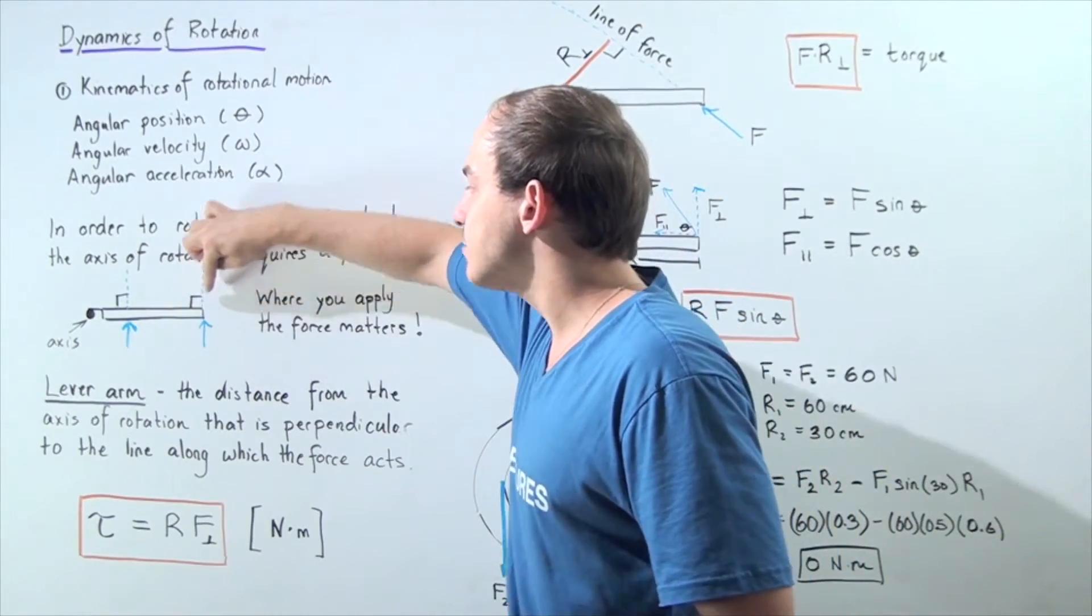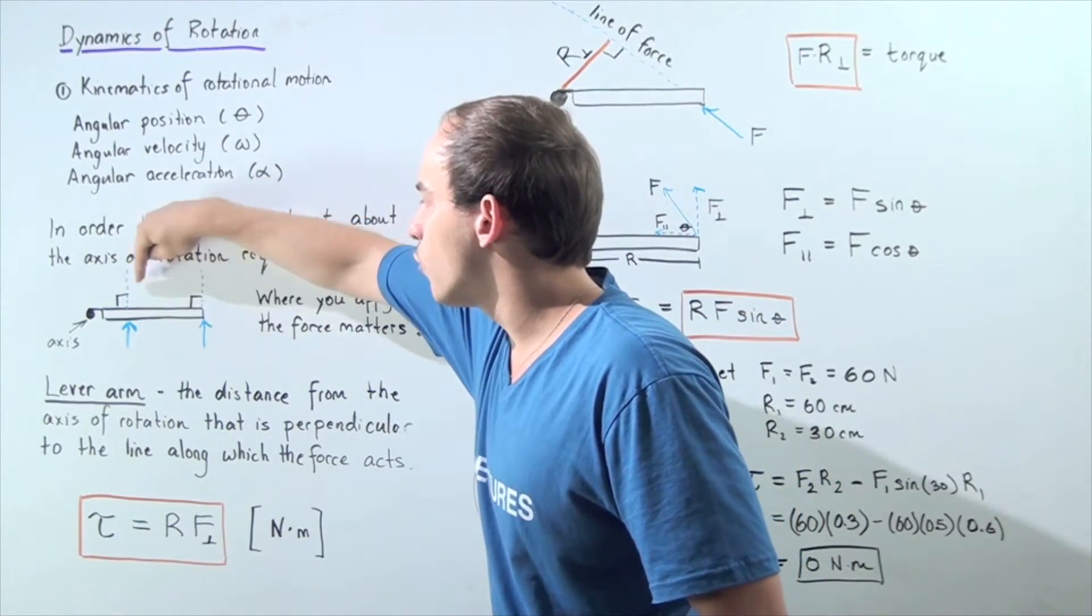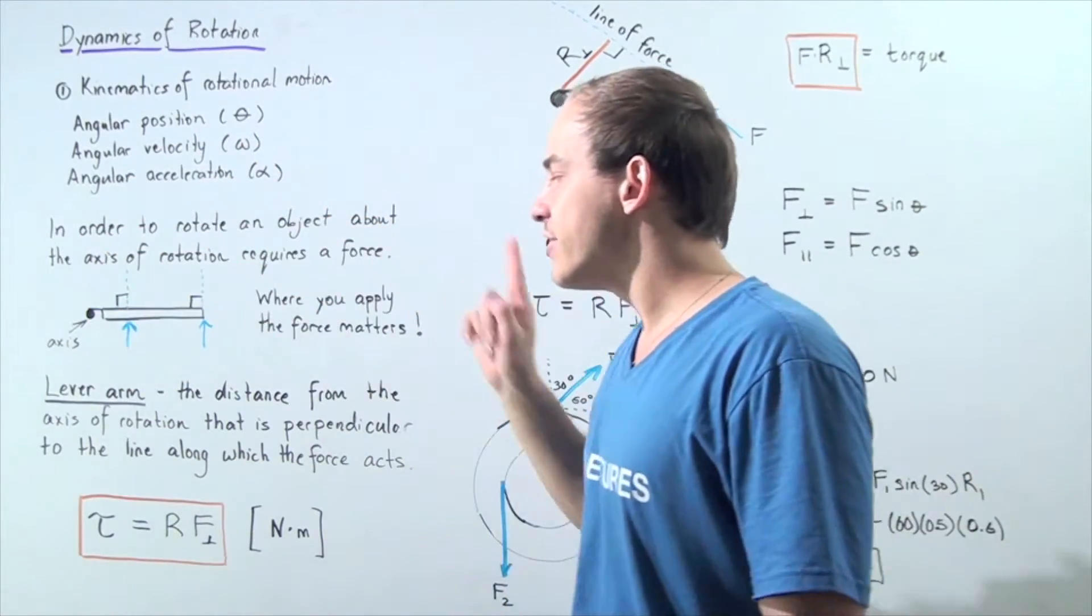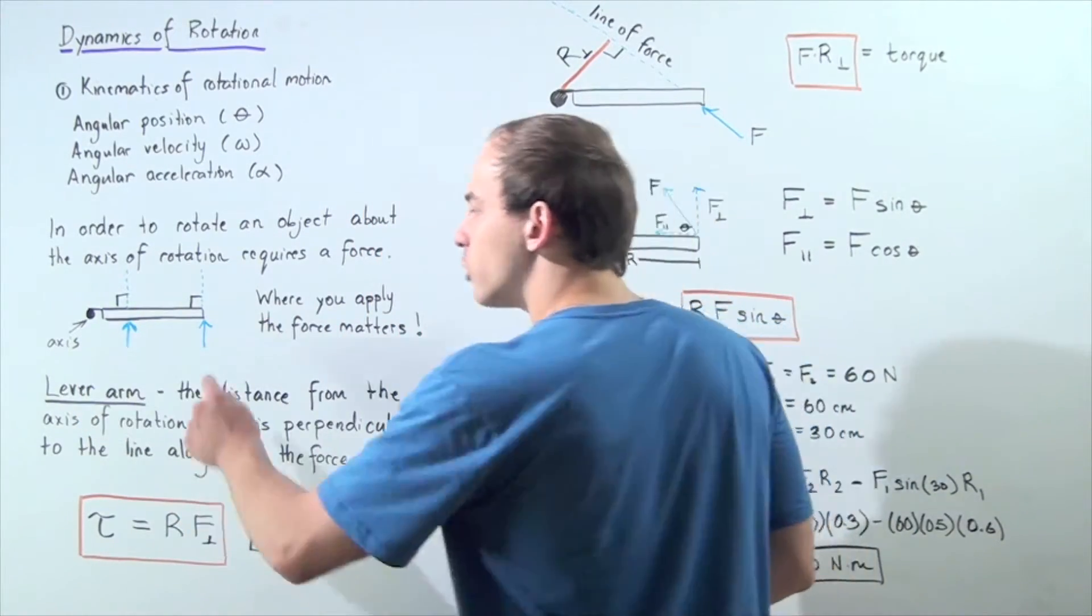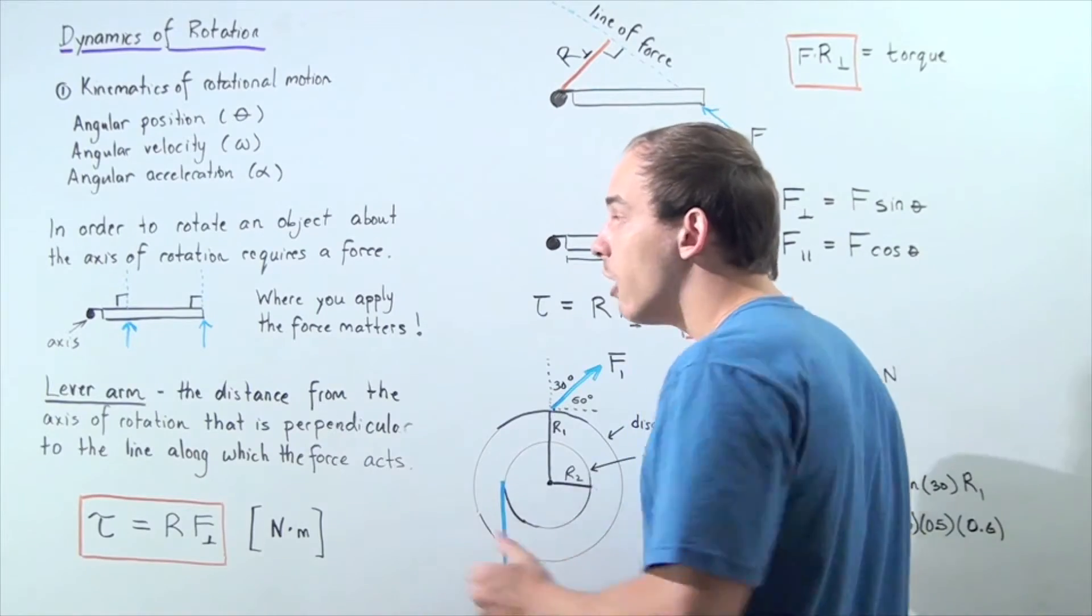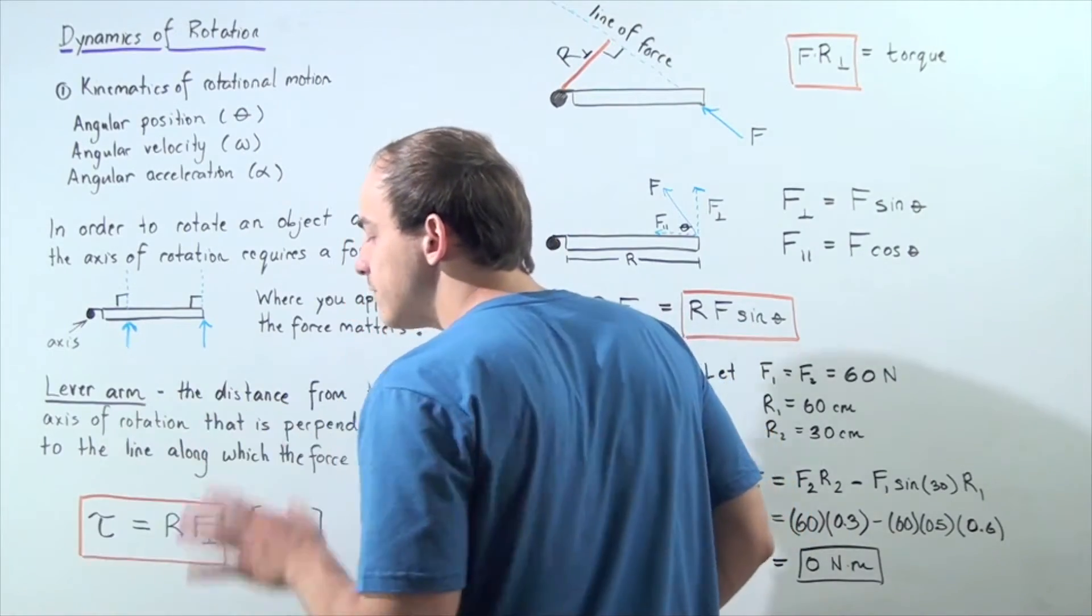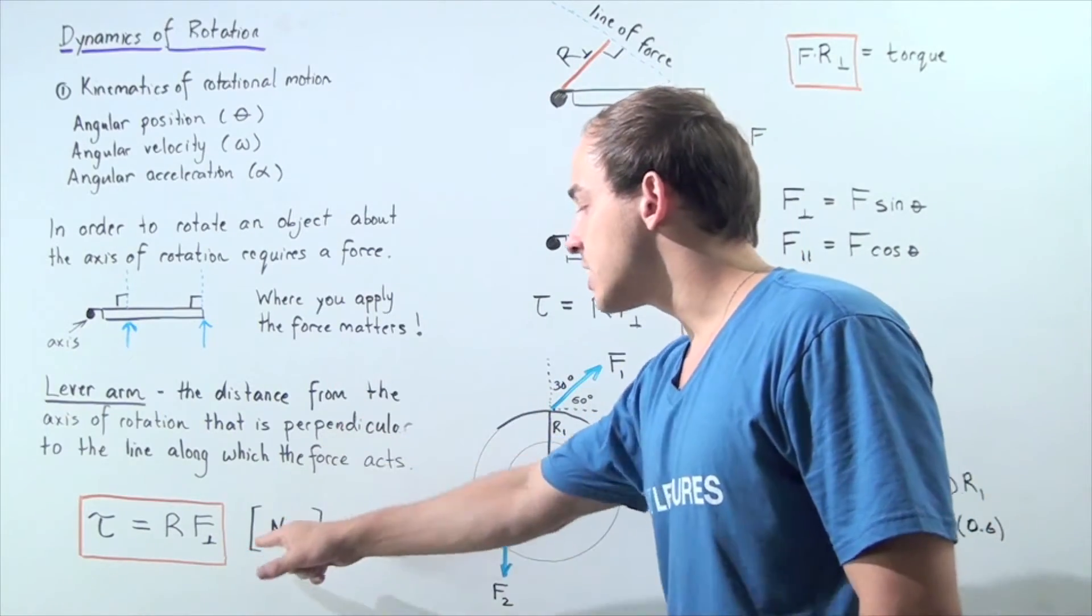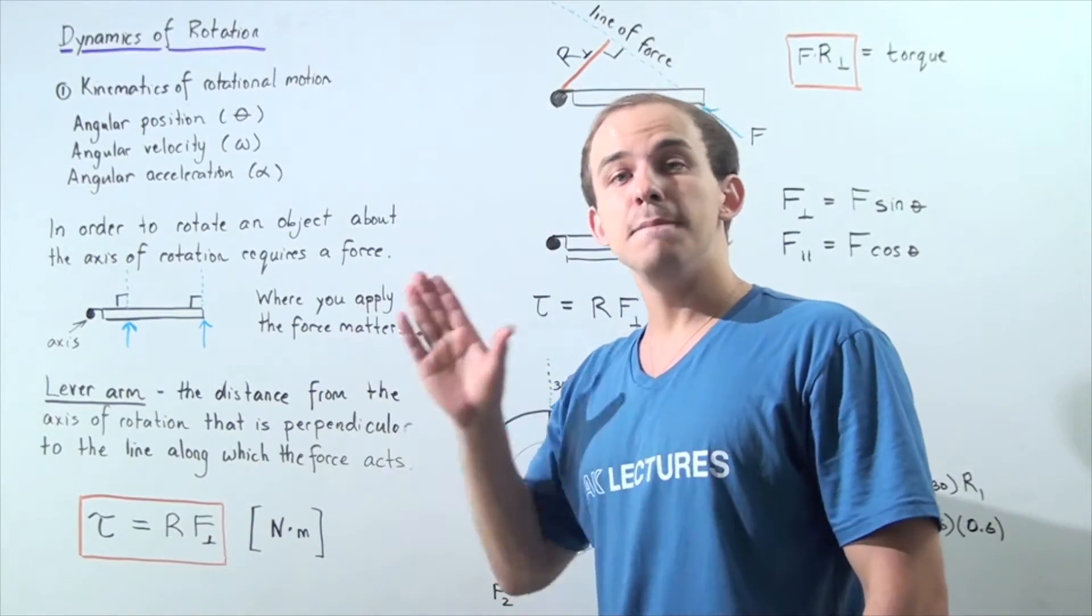So the line of force acts in the same direction as the applied force. For this force, the line of force is here. For this force, the line of force is here. Notice it is perpendicular to the door. That means our lever arm for this force is this distance. Our lever arm for this force is this distance. So if we take the product of our lever arm and the force, we get something known as the torque, given by Greek lowercase letter tau. The units of torque are newtons times meter because force has the unit of newtons and this is a distance given in meters.